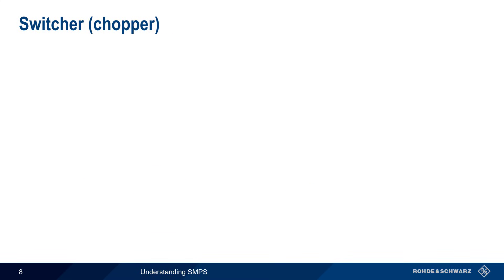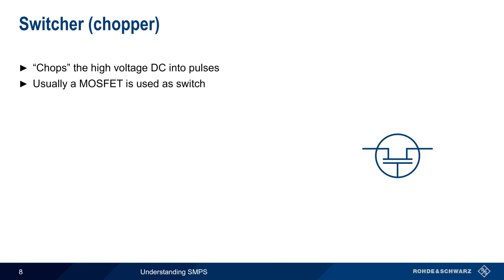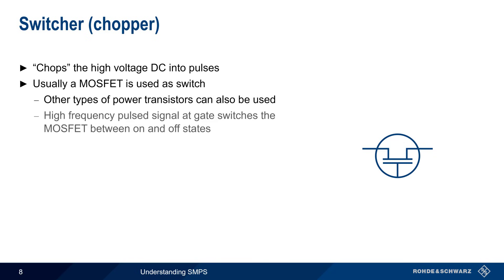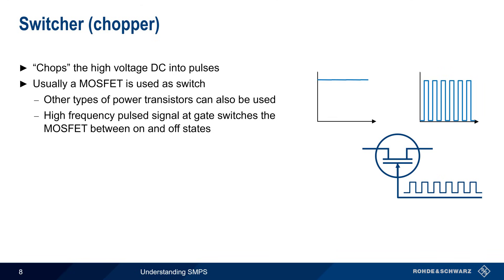The next step is chopping this high voltage DC into pulses. Most often a MOSFET is used as a switch, although other types of power transistors can also be used. A high frequency pulse signal at the MOSFET gate switches the MOSFET between the ON, or conducting state, and the OFF, or non-conducting state, in order to chop the input DC into pulses.